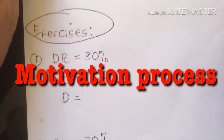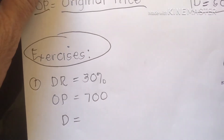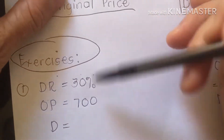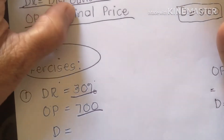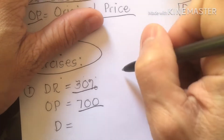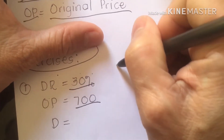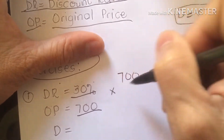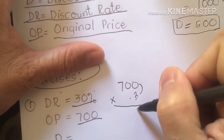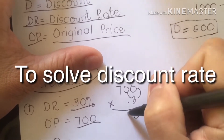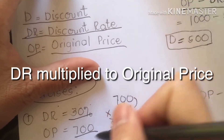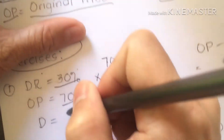We are going to proceed to our exercises. Our discount rate is 30% and our original price is 700. We are going to solve 30% of 700, so we multiply. That is our formula: 700 times 0.3. 3 times 0 is 0, 0 times 3 is 0, 7 times 3 is 21. So our discount with 30% off is P210.